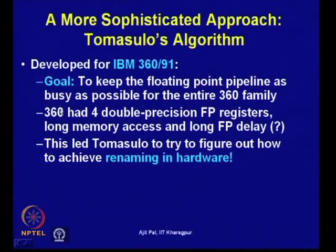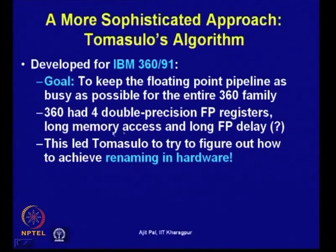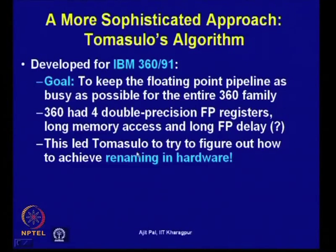The IBM 360 had a very restricted number of registers — only 4 double-precision floating-point registers — along with long memory access and long floating-point delays. In those days, cache memory had not been invented, so reading data from memory took a long time, and floating-point and multiplication operations also took longer. This led Tomasulo to figure out how to achieve register renaming in hardware.